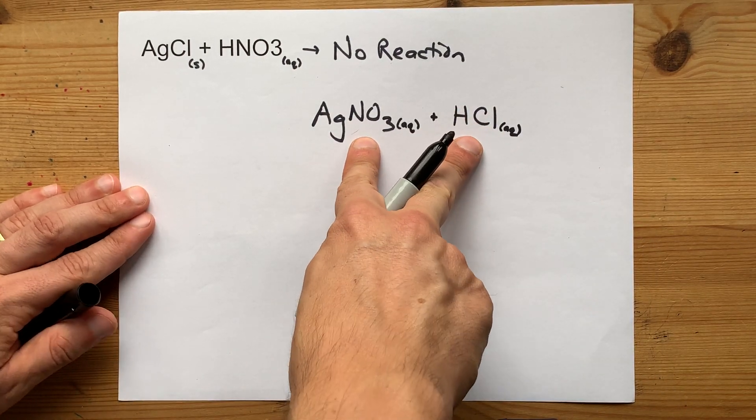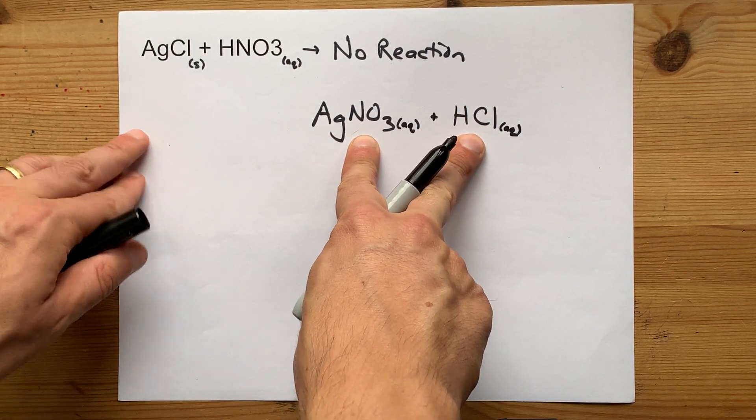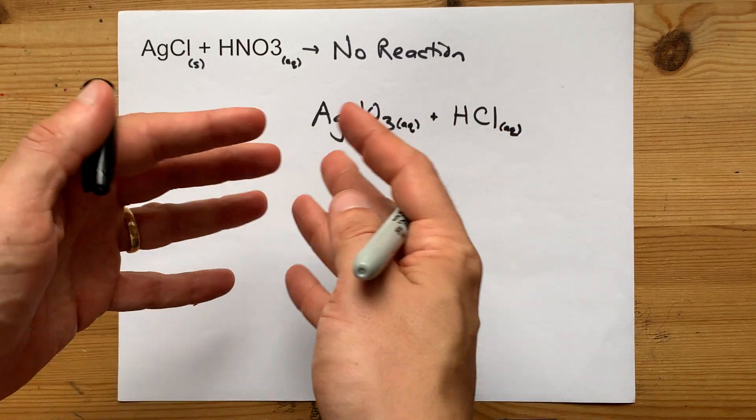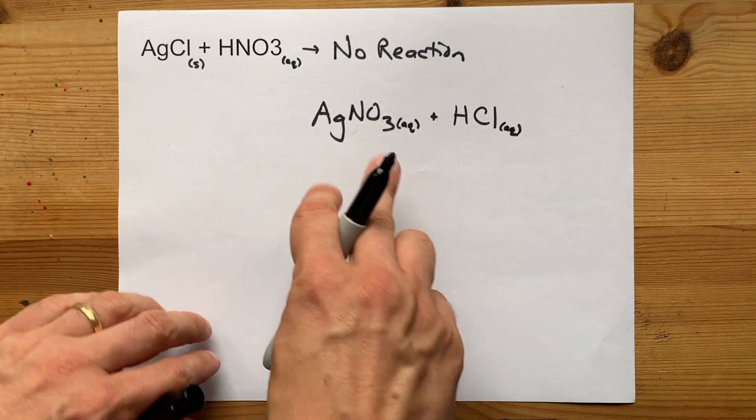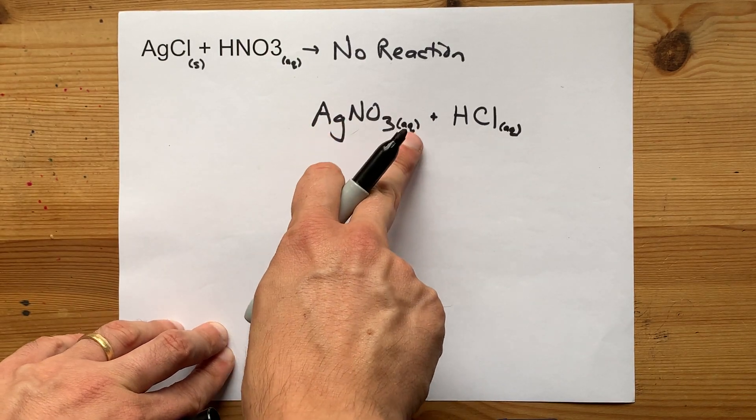Now, these two aqueous compounds are not actually pairing up together at all because they're dissolved in water. So the ions have separated from each other.